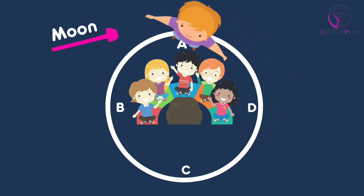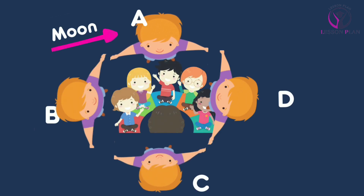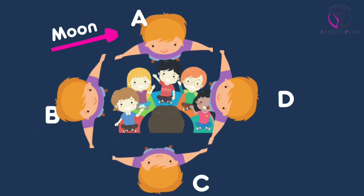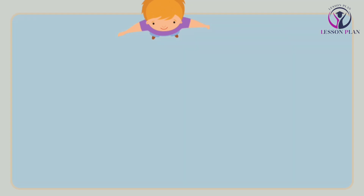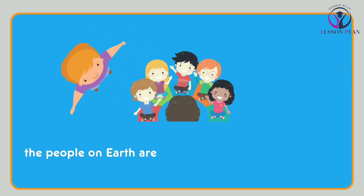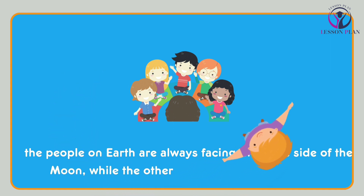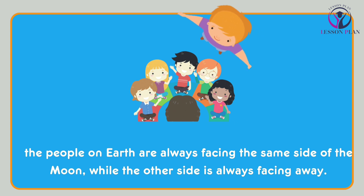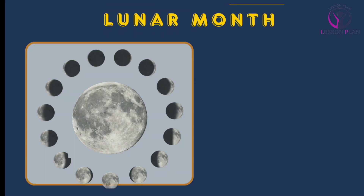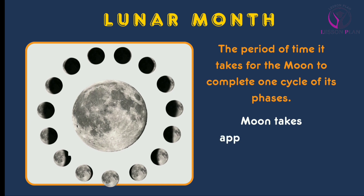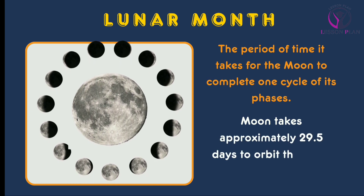The learner acting as the moon should slowly and carefully walk in a circle around the earth, stopping at positions A, B, C, and D. The learner should rotate slowly while doing this, as shown in the diagram. The group representing people on earth will always see the same side of the moon, regardless of the moon's movement around the earth.